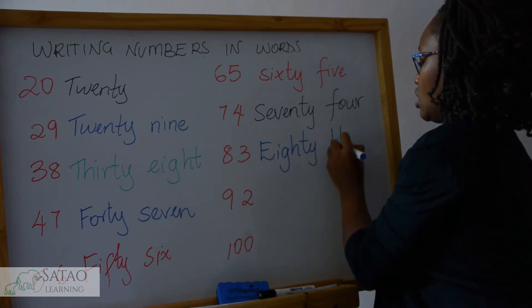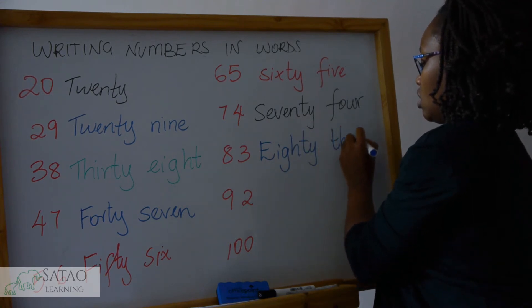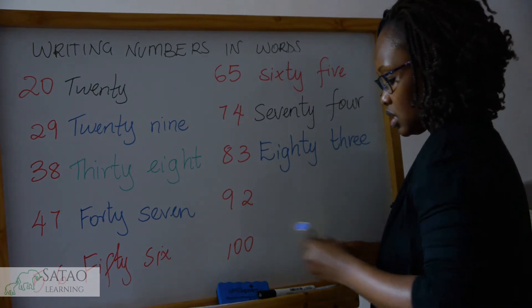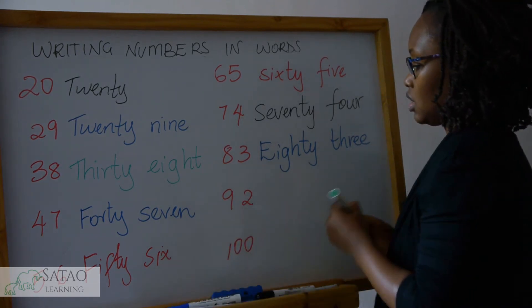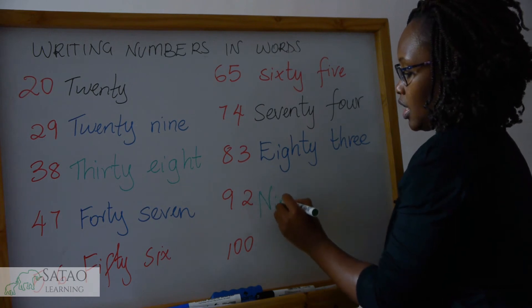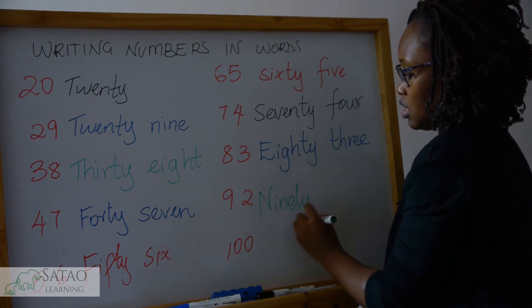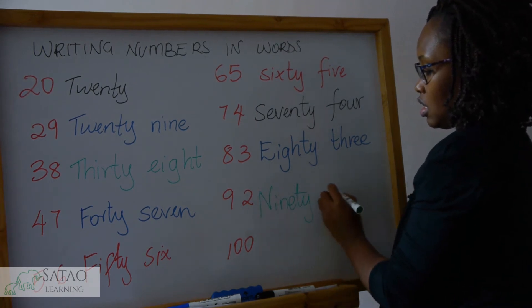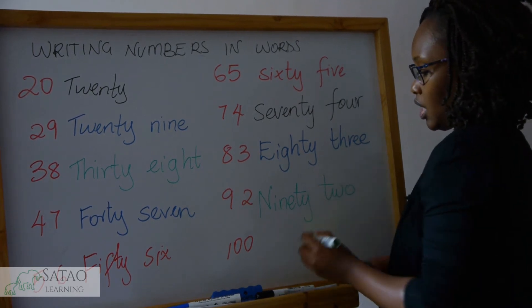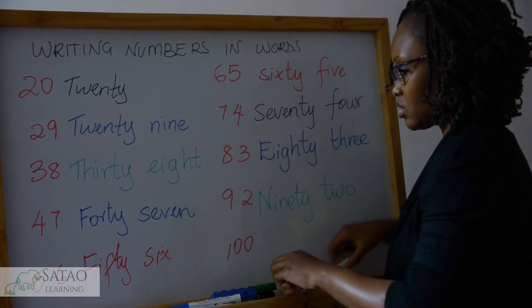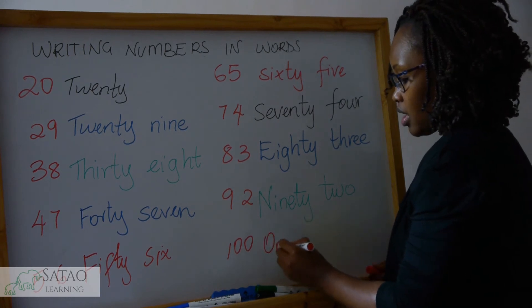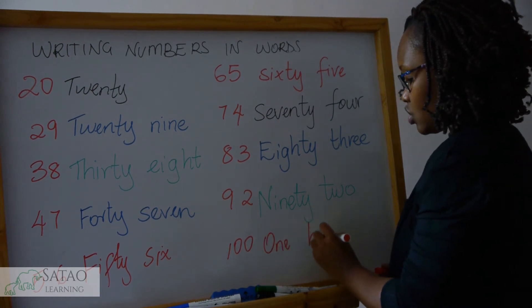The next one is eighty, then eighty-three. The one after that is ninety-two, and then the last one is one hundred — that's how you write one hundred.